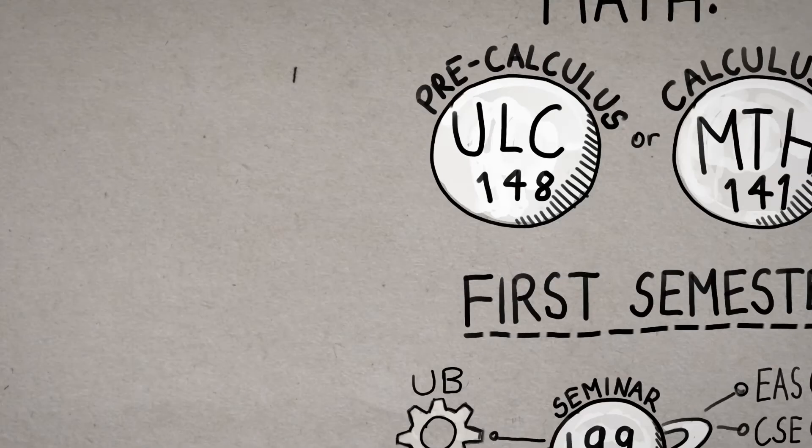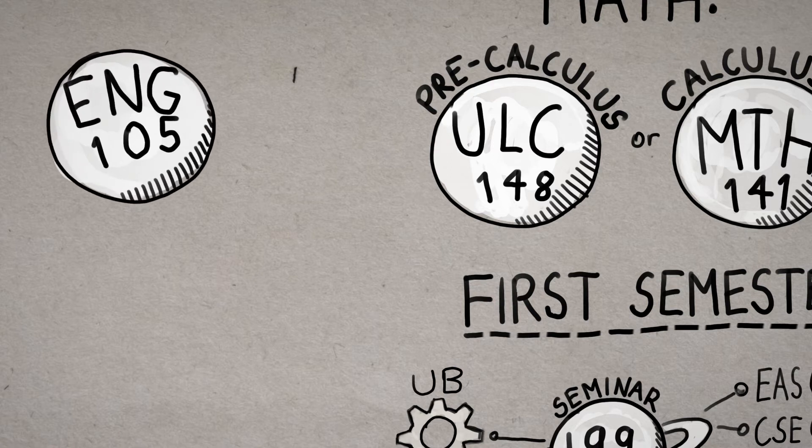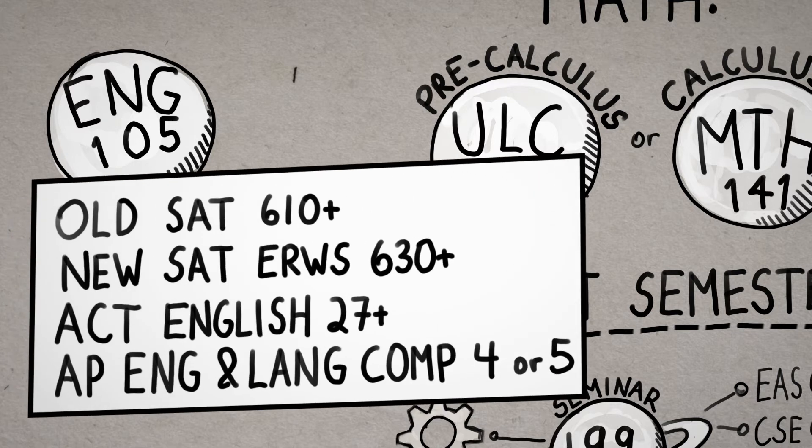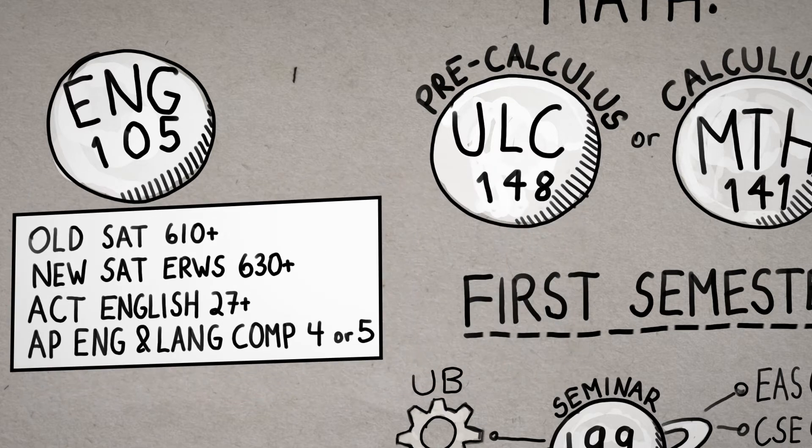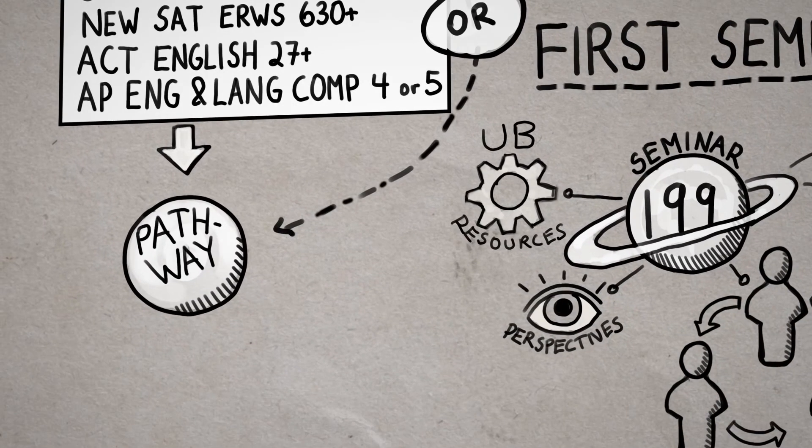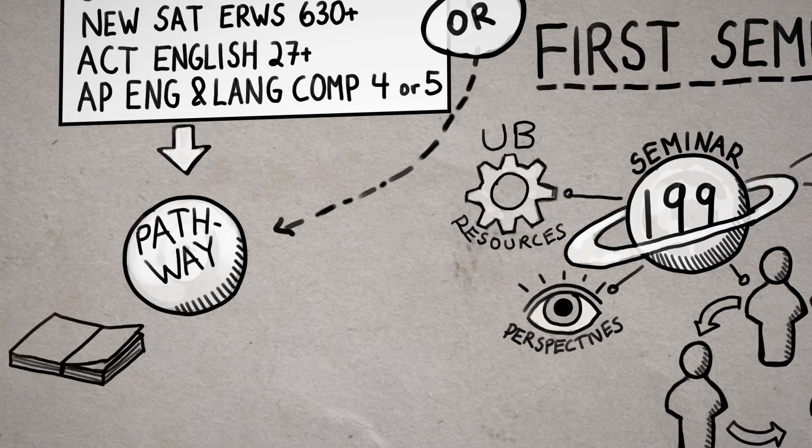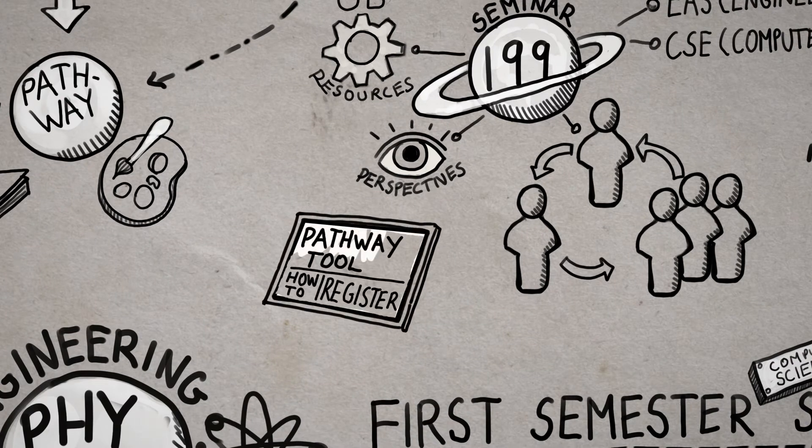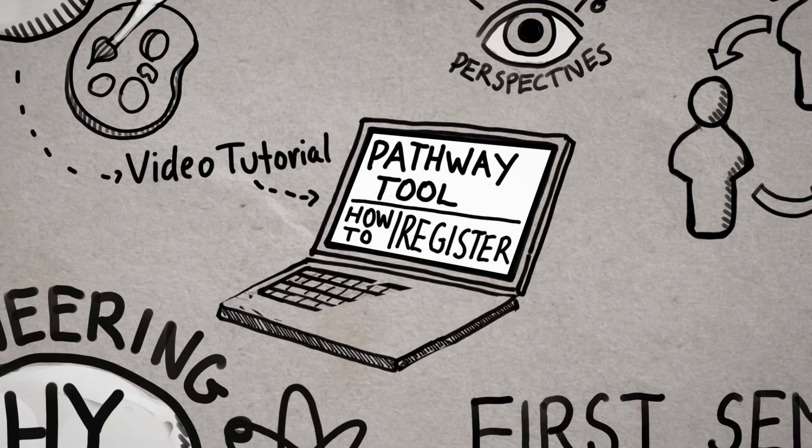Finally, you might see English Writing and Rhetoric on your schedule. Here's the chart for English 105 placement. It shows the scores you need to get waived from English 105. If you are waived from English 105, you'll need to pick a pathway to add to your schedule. A pathway is a general education requirement, like an art or a humanities class. Your schedule email will have information on how to select a pathway course. It includes a video tutorial and instructions for registration. More on this in a little bit.